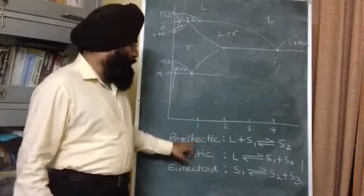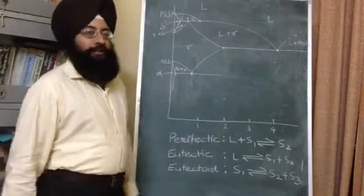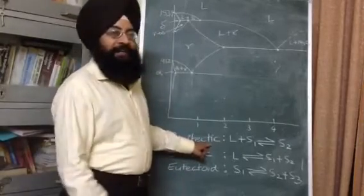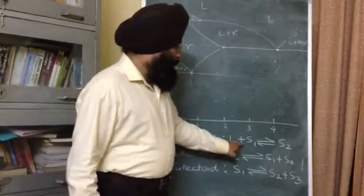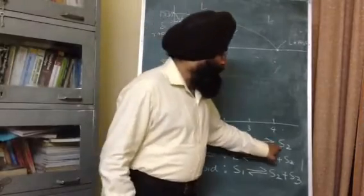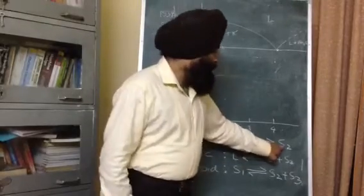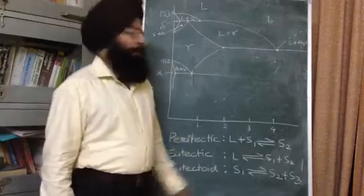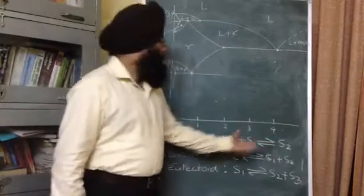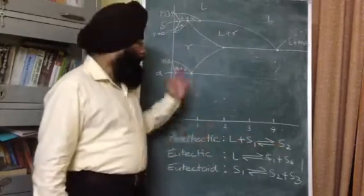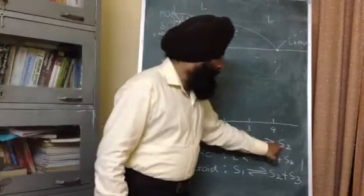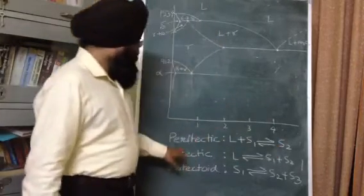Before studying these reactions for the iron-carbon diagram, let us see the general equations for these three reactions. The general equation for the peritectic reaction is: liquid plus solid 1, on cooling, gets converted into another solid — generally written as solid 2. The reverse reaction is feasible on heating.